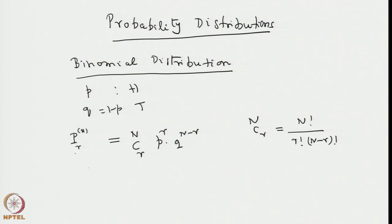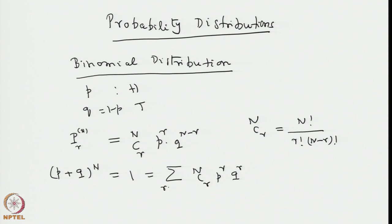We can note this as the r-th term in the binomial expansion of (p+q)^n, which equals 1 since q = 1 minus p. The full binomial expansion is the sum from r=0 to n of n-C-r times p^r times q^(n−r). So if you sum all these probabilities you get 1, which is consistent with the normalization of a probability distribution — one of the sequences must turn up. This confirms our probability distribution function is consistent with normalizability.